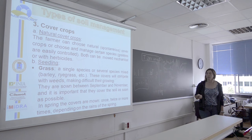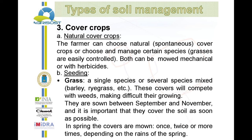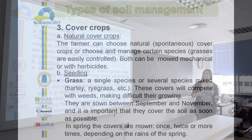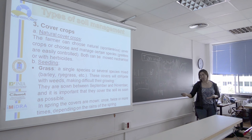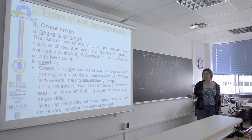It's quite common to use barley or ryegrass. These covers will compete with weeds, making it difficult for the weeds to establish. They are sown between September and November, and the farmer has to make sure that the cover crop will cover most of the soil before the high-rainfall period. In spring, the covers are mowed, usually once or twice, but if not done at the proper time, more passes may be needed.